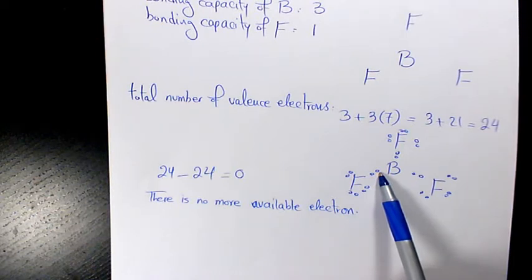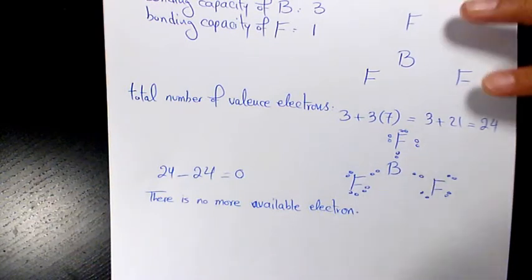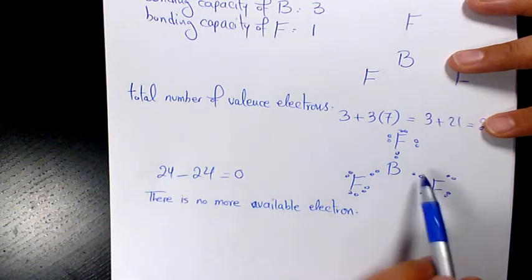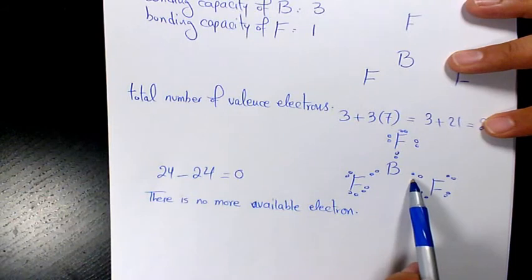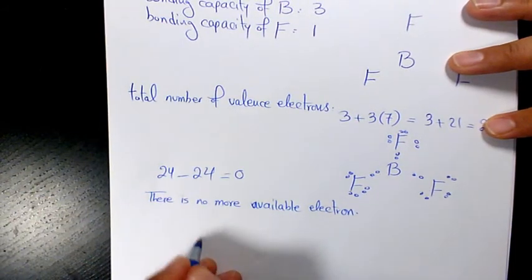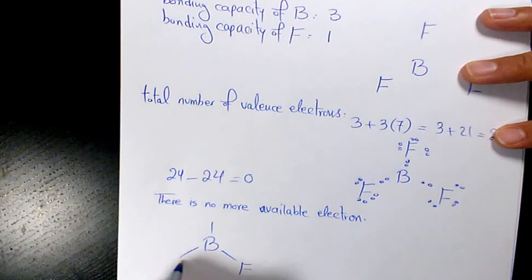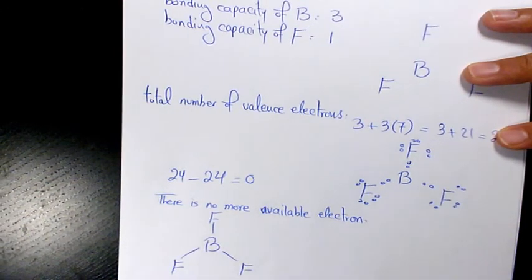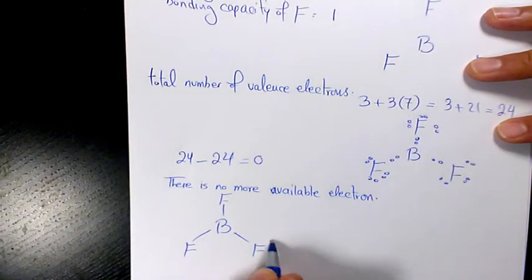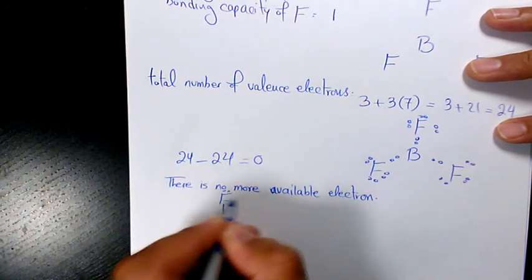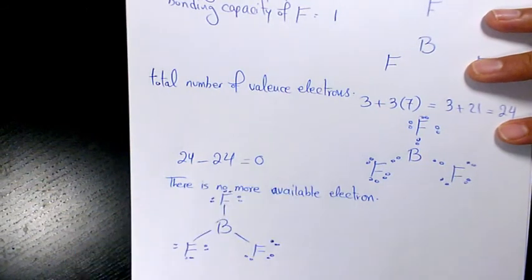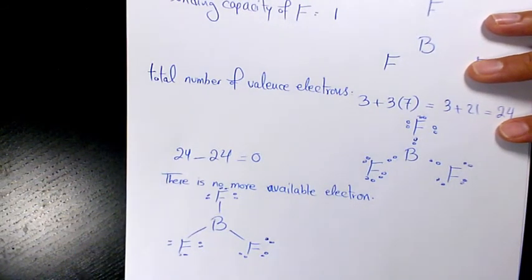Boron is usually incomplete, so we keep it like that. We have only single bonds with fluorine. We cannot move the lone pairs in here. So the final Lewis structure is going to be a single bond with each fluorine, and we have three lone pairs on each fluorine. That's the Lewis structure for BF3 or boron trifluoride.